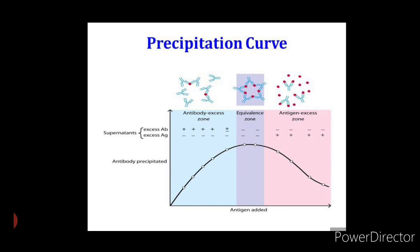Plotting the amount of precipitate against increasing antigen concentrations yields a precipitin curve. As the figure shows, excess of either antibody or antigen interferes with maximal precipitation, which occurs in the so-called equivalence zone where the ratio of antibody to antigen is optimal. A large multimolecular lattice is formed at equivalence; the complex increases in size and precipitates out of solution.